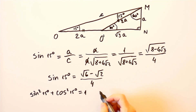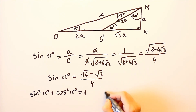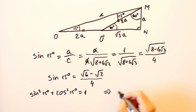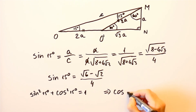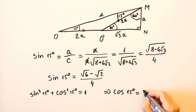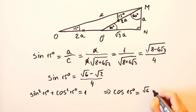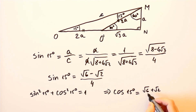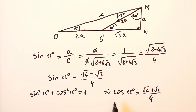This gives us that the cosine of 15 degrees is equal to the square root of 6 plus the square root of 2 over 4, but I leave it to you to verify that.